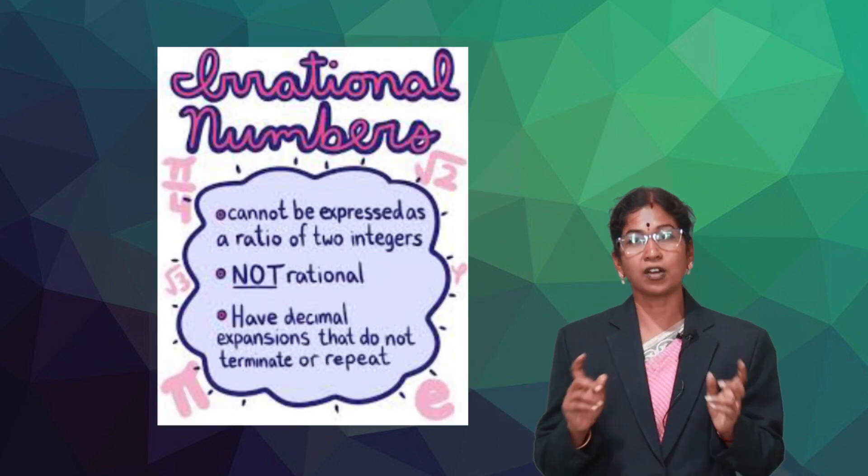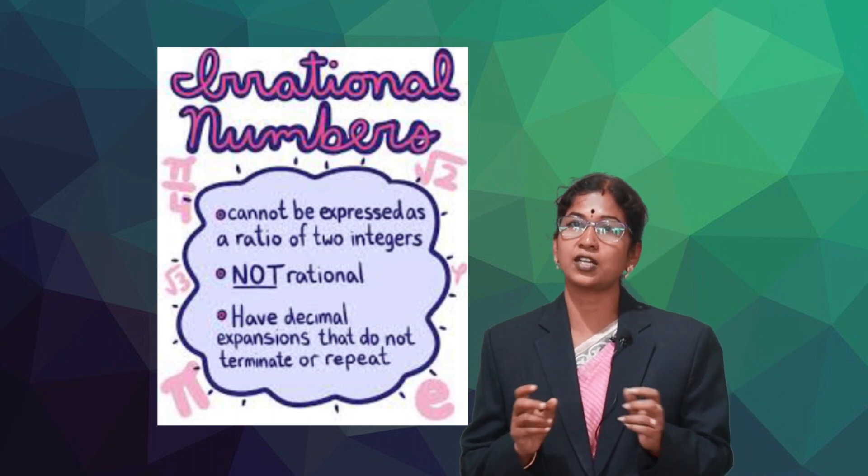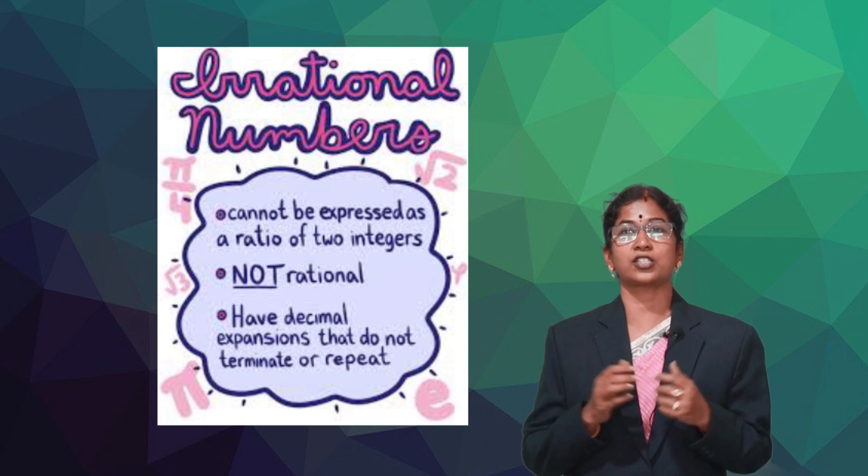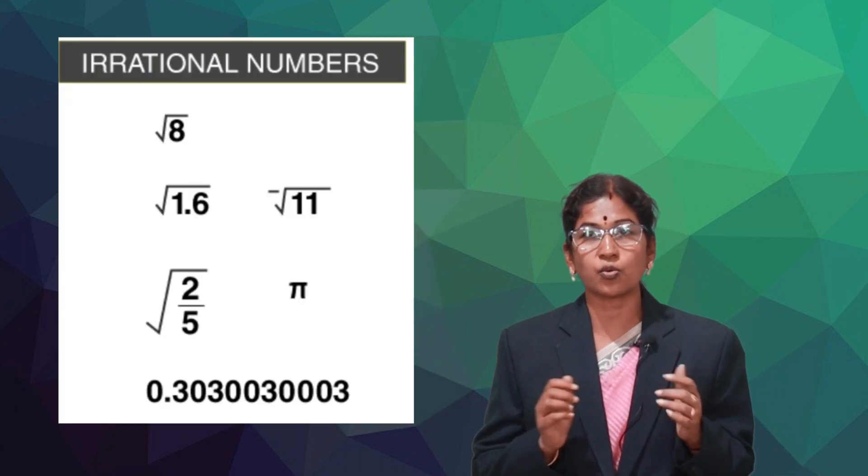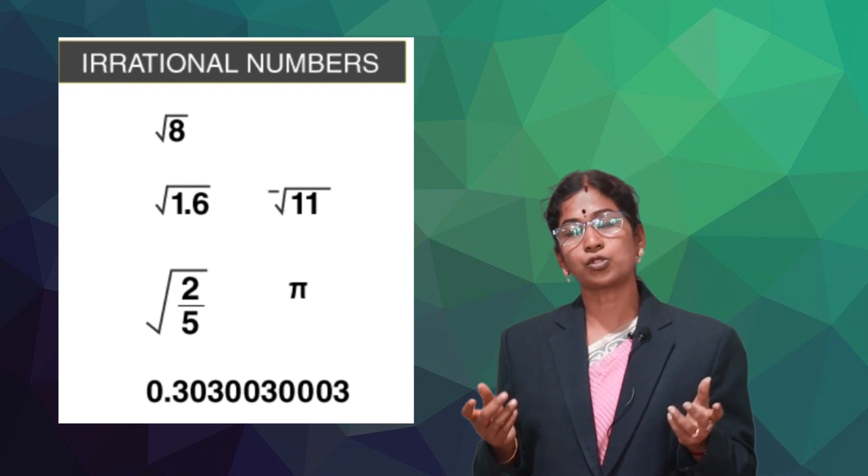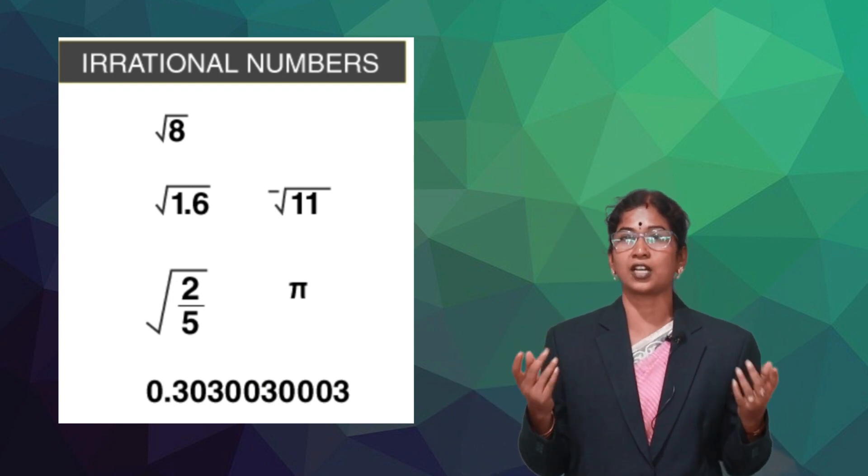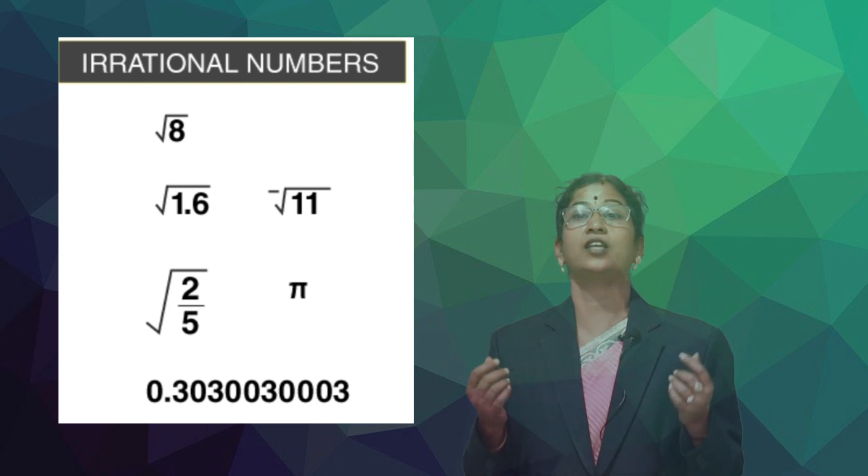The numbers which are not rational are irrational. So irrational numbers are the set of numbers that can't be written in the form of P by Q. So non-perfect square numbers like root two, root three, root five and so on are irrational numbers. And irrational numbers are denoted by Q bar.